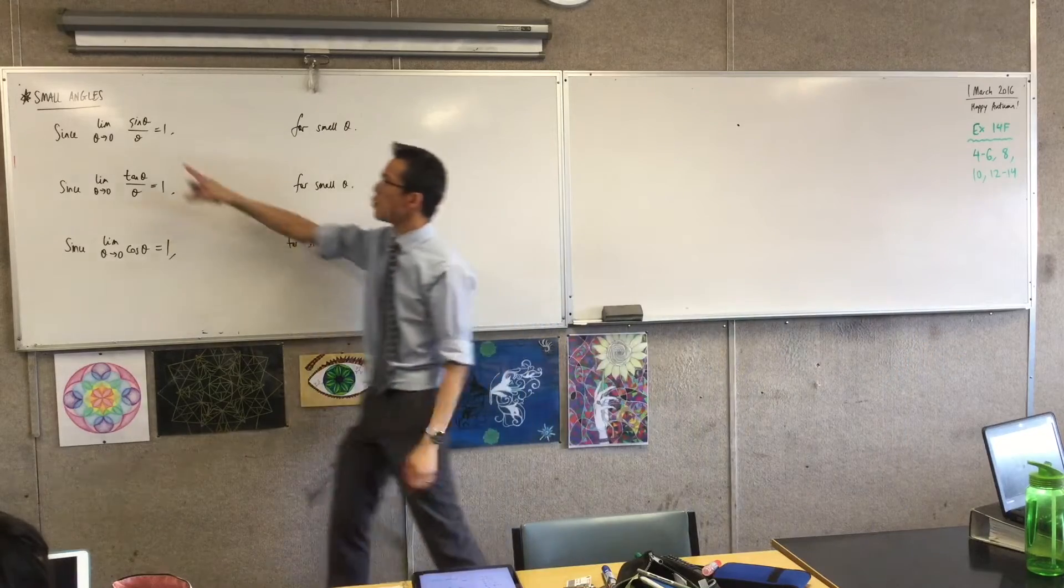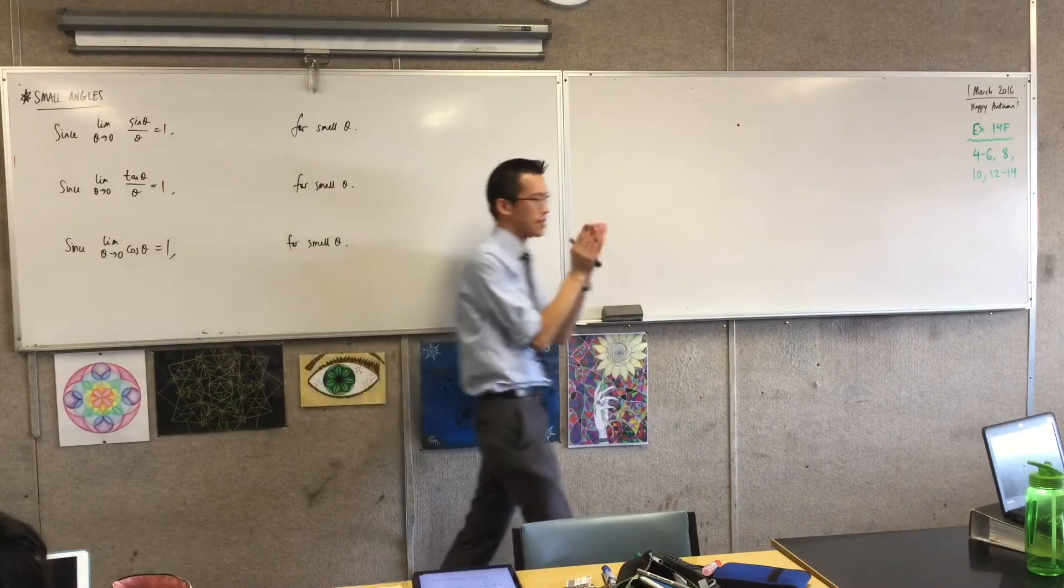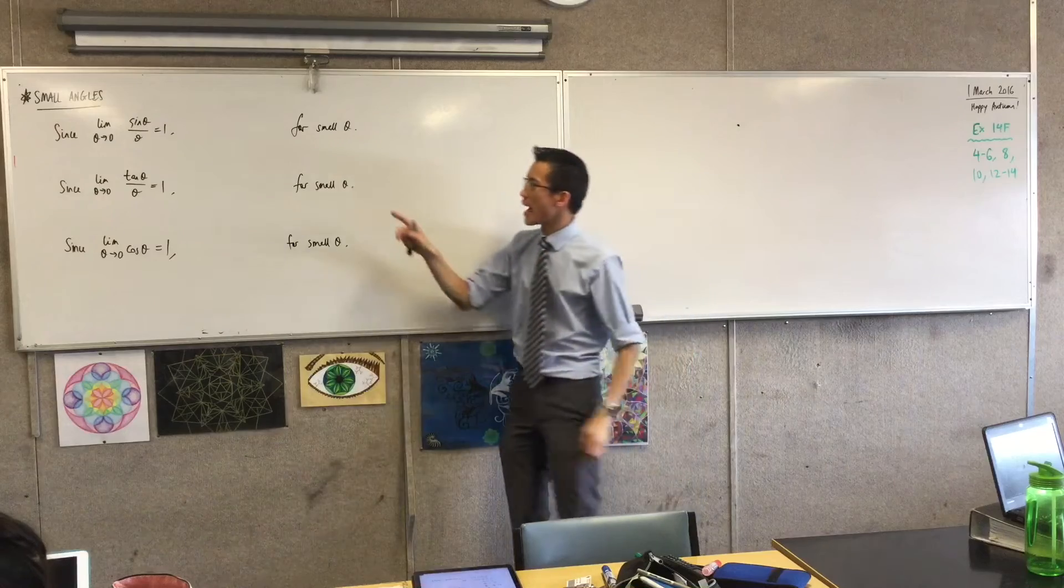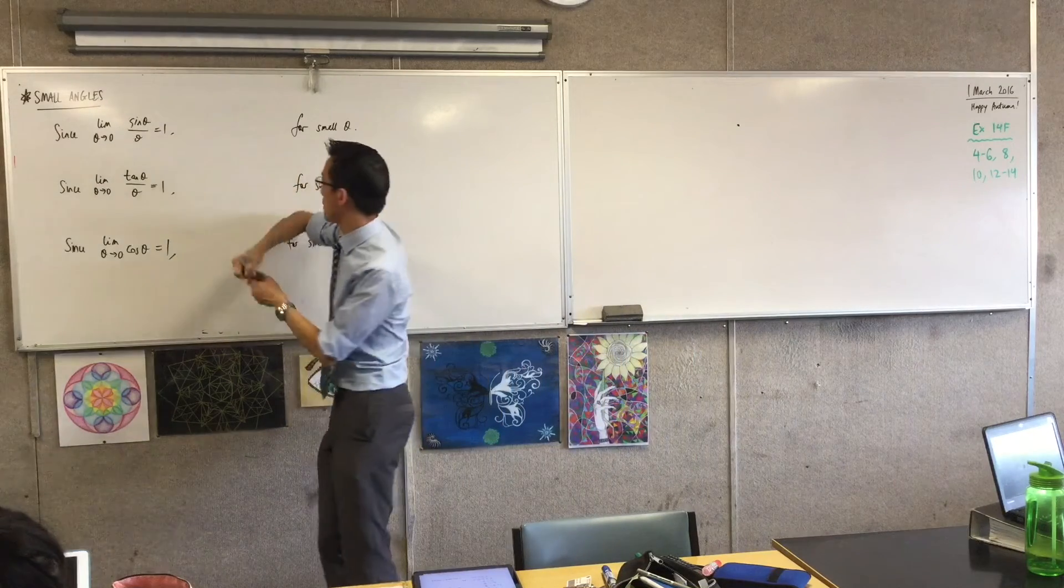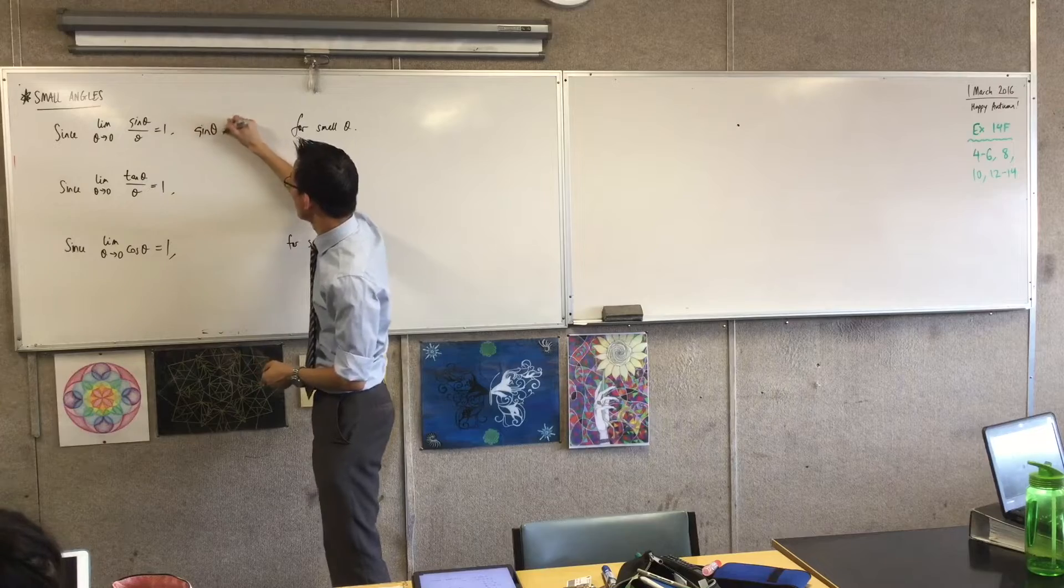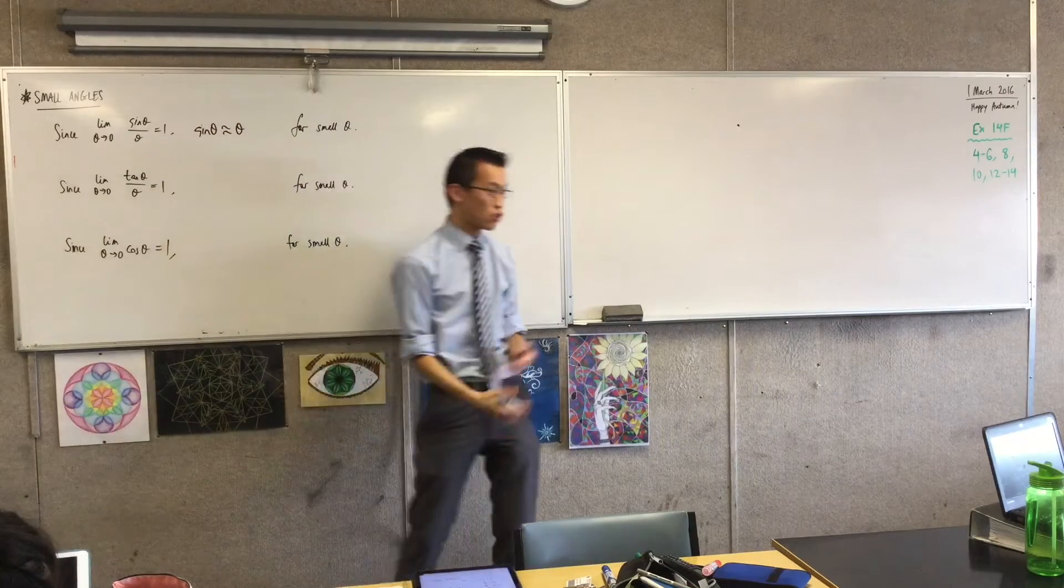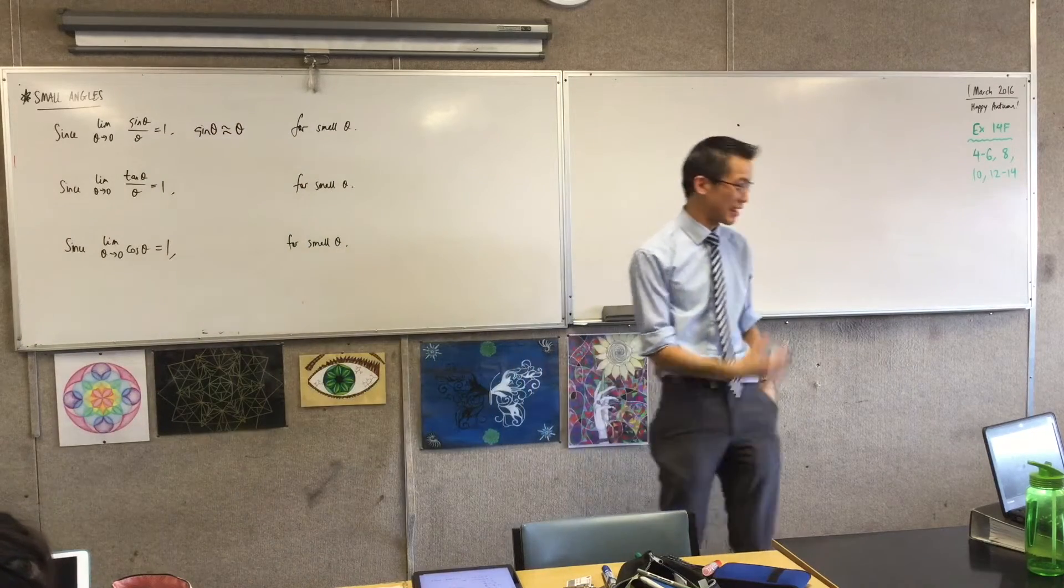So if you've got small angles, if you're dealing with tiny, tiny, thin angles, that means that for small theta, this tells me that sine theta and theta, the actual values should be about the same. That's what that means, the ratio being one.